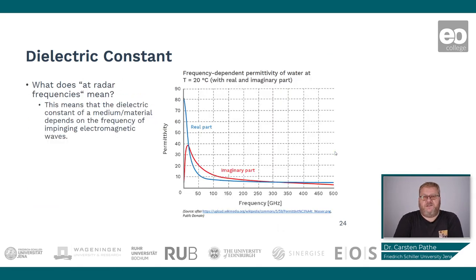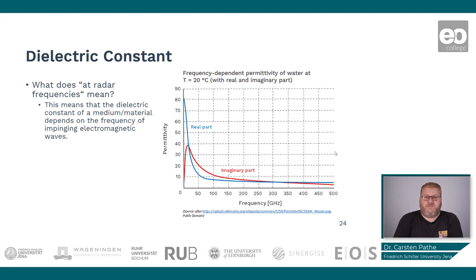In literature you will often read about the dielectric constant at radar frequencies. This actually means that the dielectric constant depends on the frequency of the electromagnetic waves or pulses. This is also shown in the diagram on the right-hand side, in this case for water at a temperature of 20 degrees. We see that the real part of the dielectric constant decreases rapidly with increasing frequency.